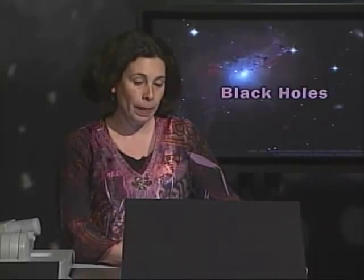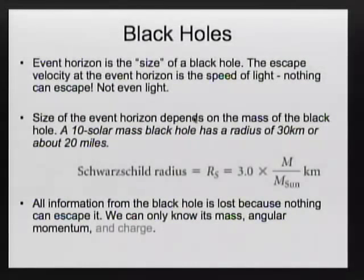That location — that position away from the singularity, away from the black hole — is what we usually refer to as the radius of the black hole, the event horizon, because you can never observe anything inside that. Light can never escape from a location inside it. So the event horizon is what we usually refer to as the size of the black hole. Nothing can escape from it, not even light.